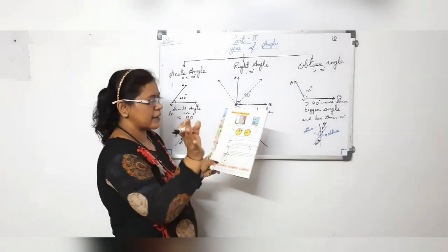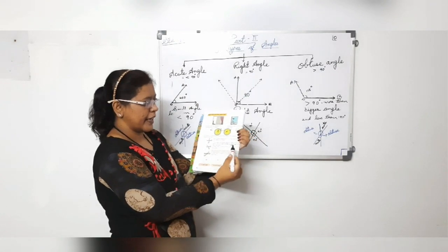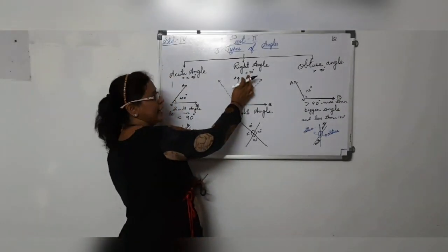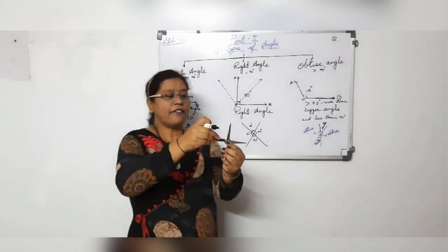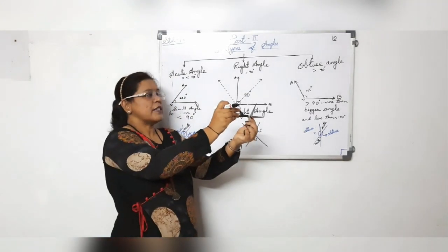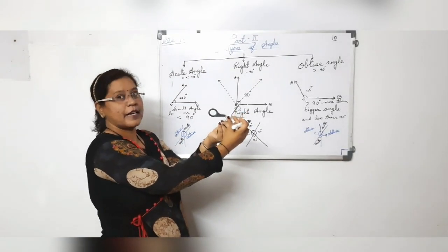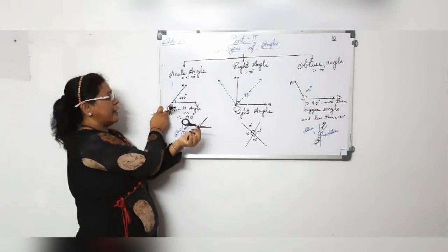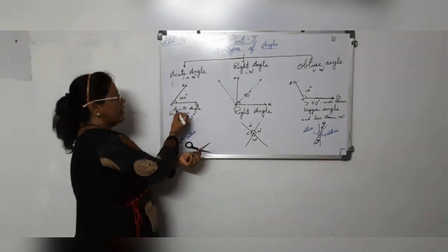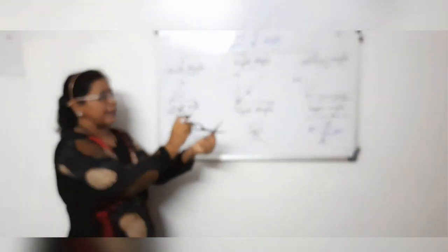As we reduce the distance between the two tips of the blade little by little, the angle between the blades grows smaller than the right angle. An angle which is smaller than a right angle — smaller than 90 degrees — forms an acute angle. A smaller angle which is less than 90 degrees is an acute angle.